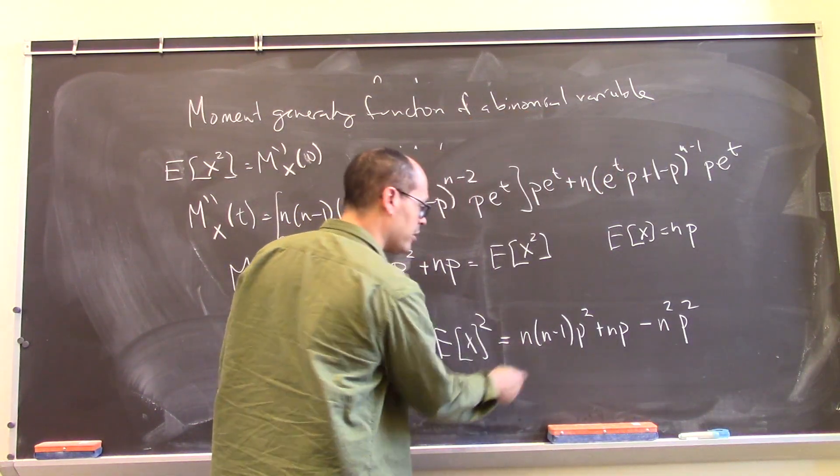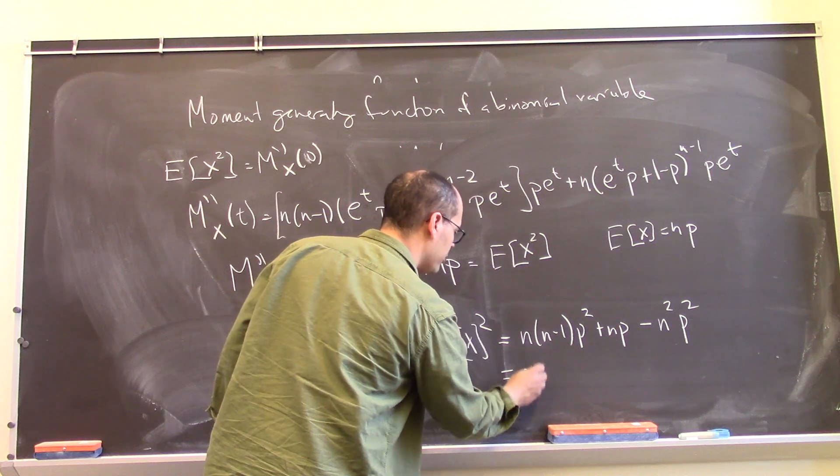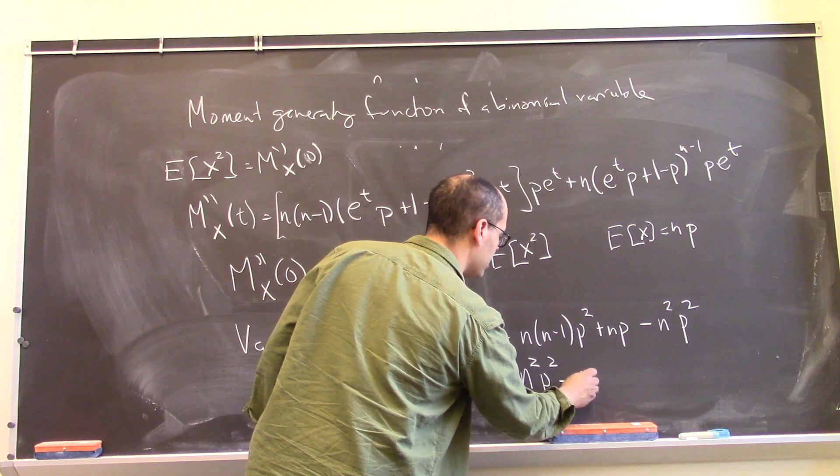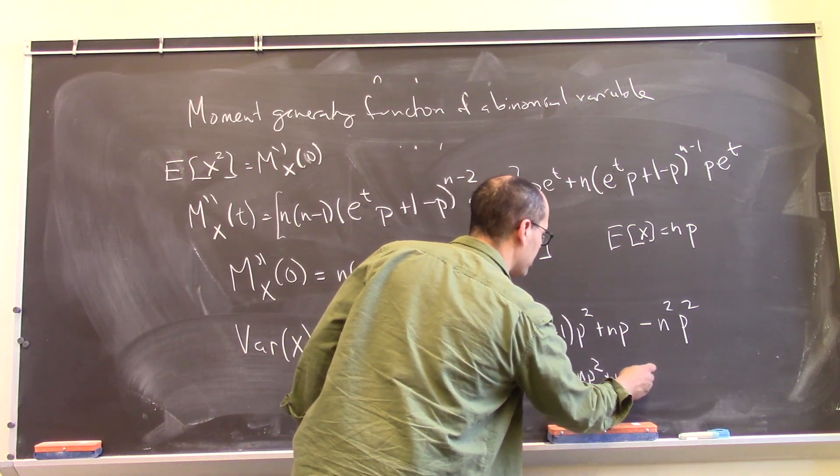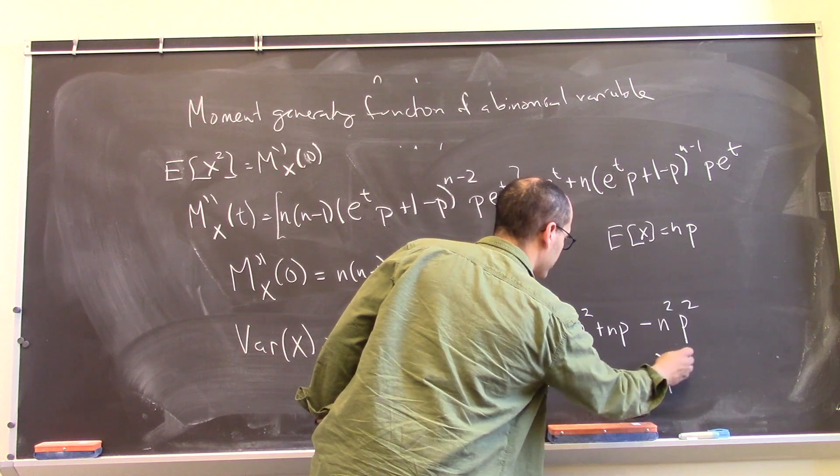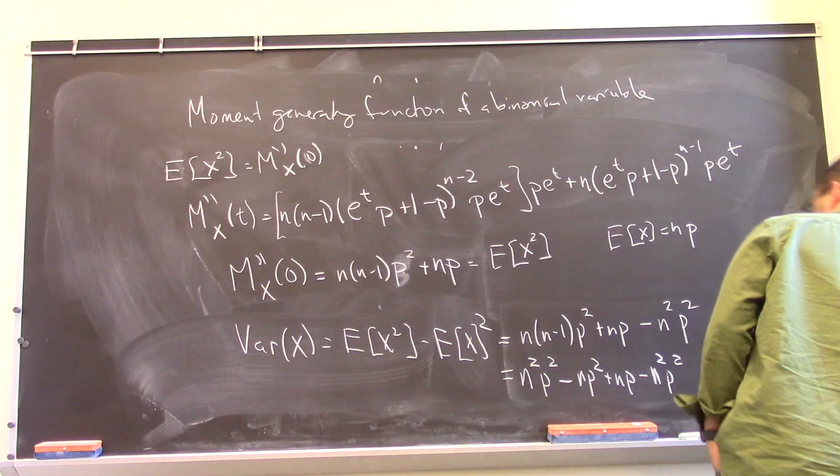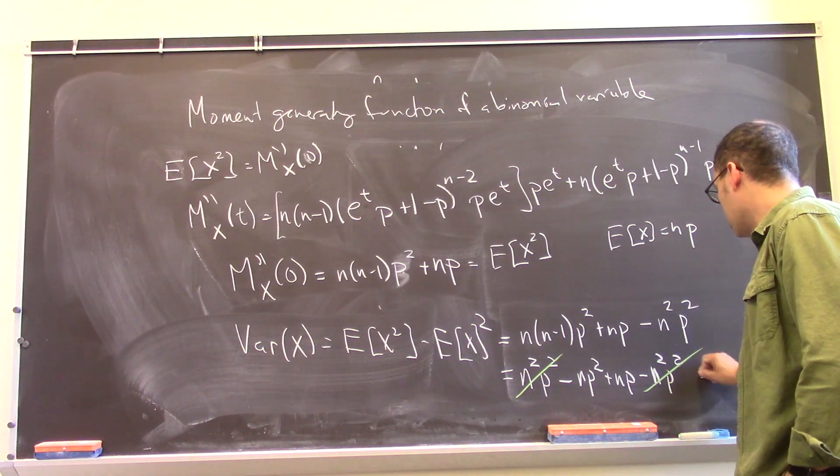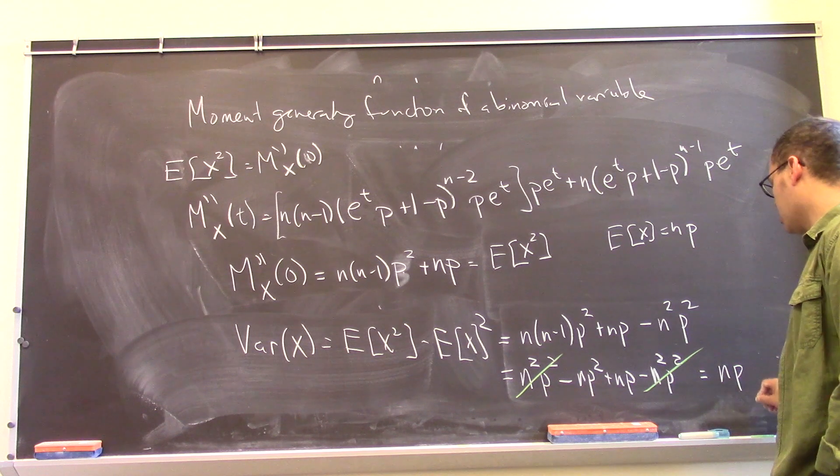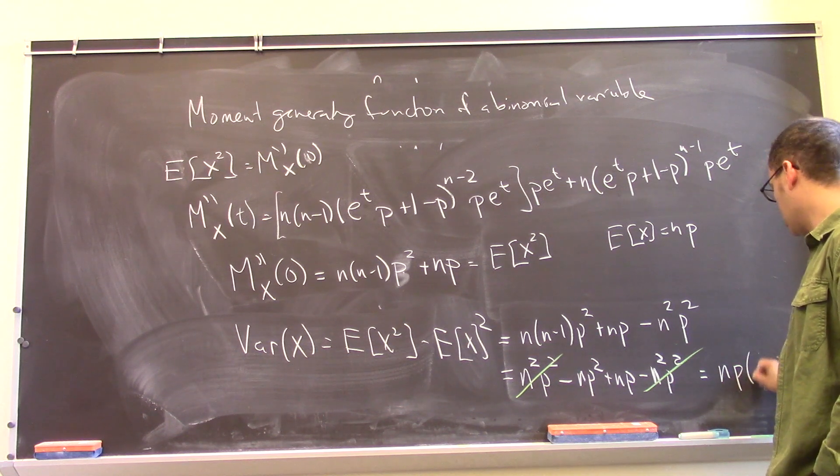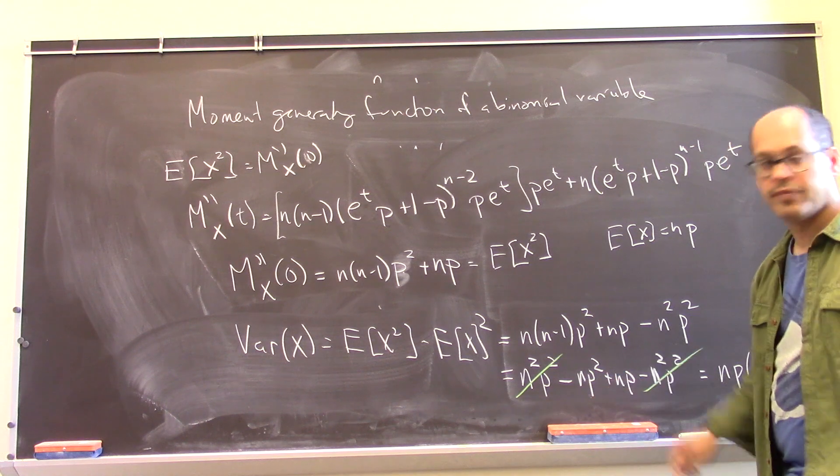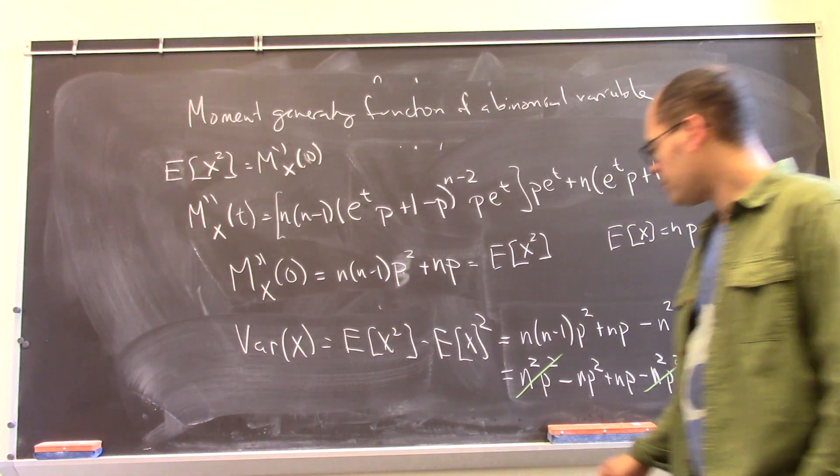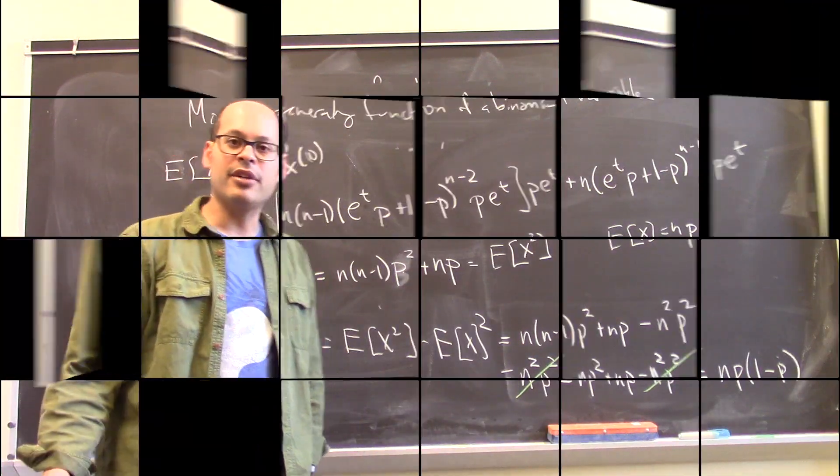And so if I were to multiply that out, what do you see? You get this n squared p squared minus np squared plus np minus n squared p squared. So these guys annihilate each other. And we are left with np times 1 minus p. That term right there. And that gives us the variance. Alright, so that was kind of fun, right?